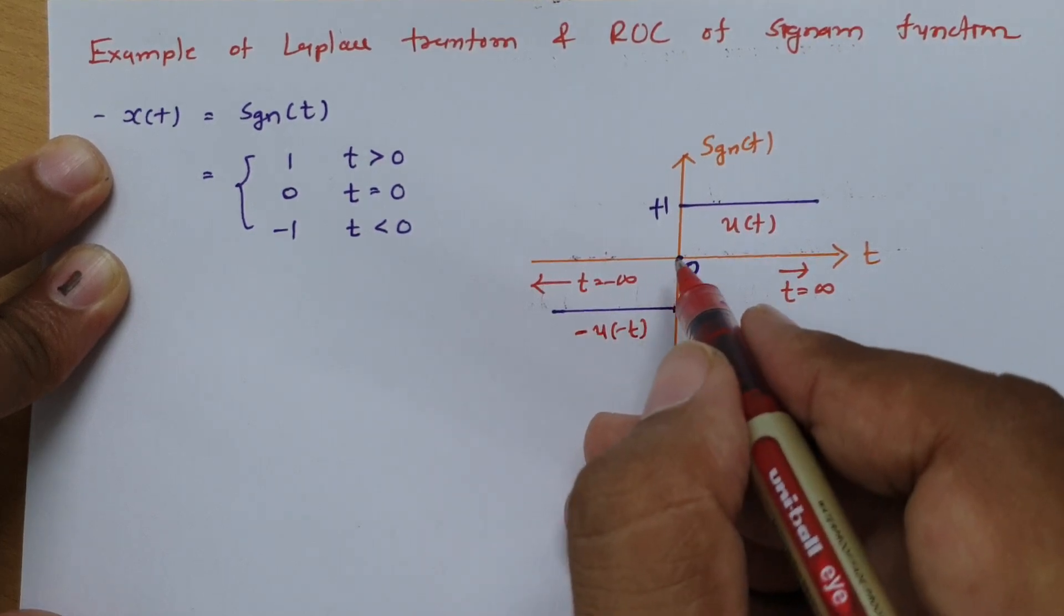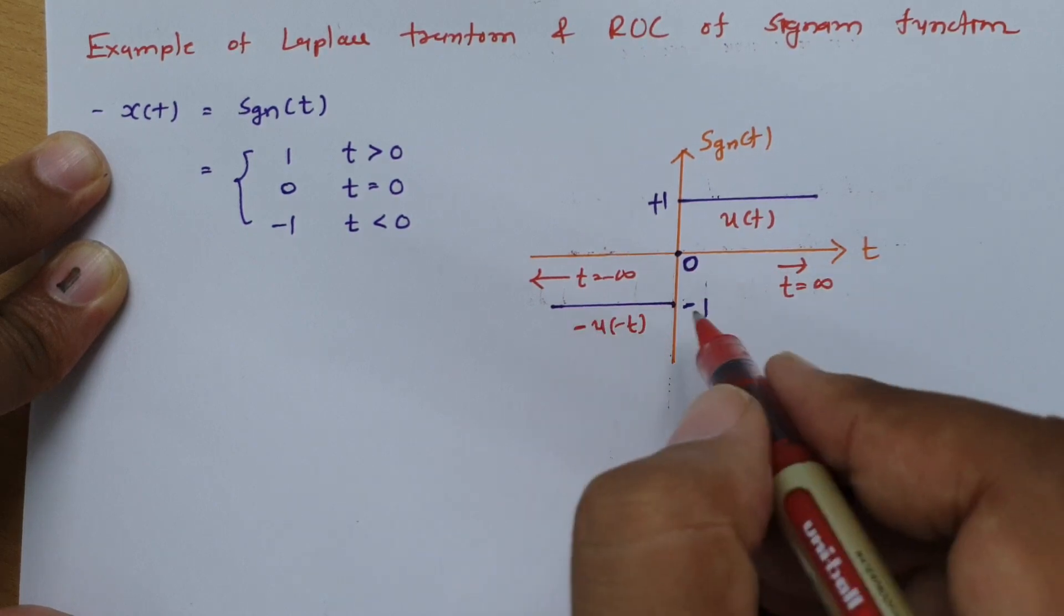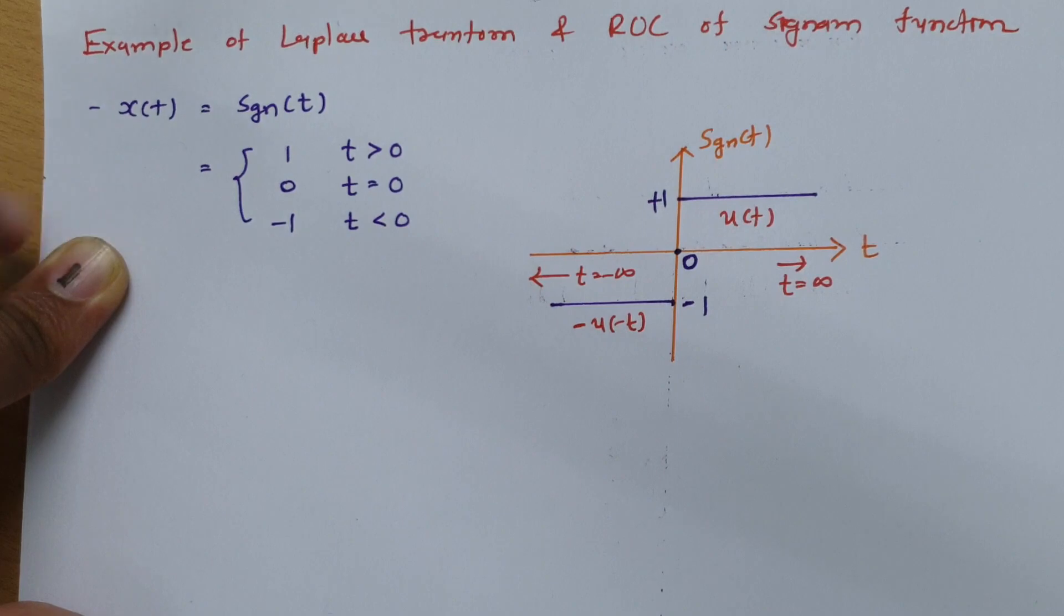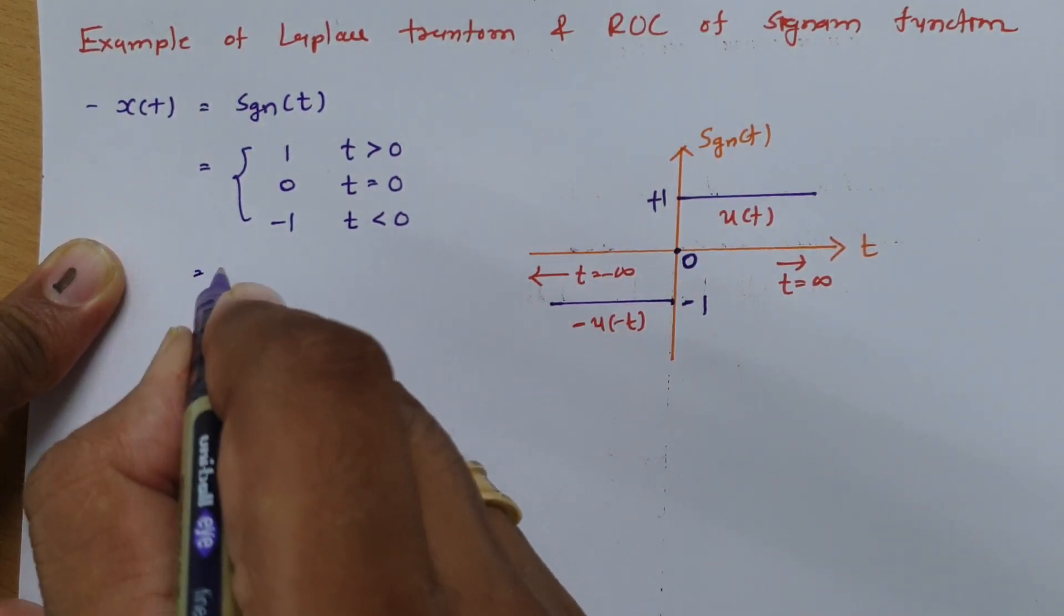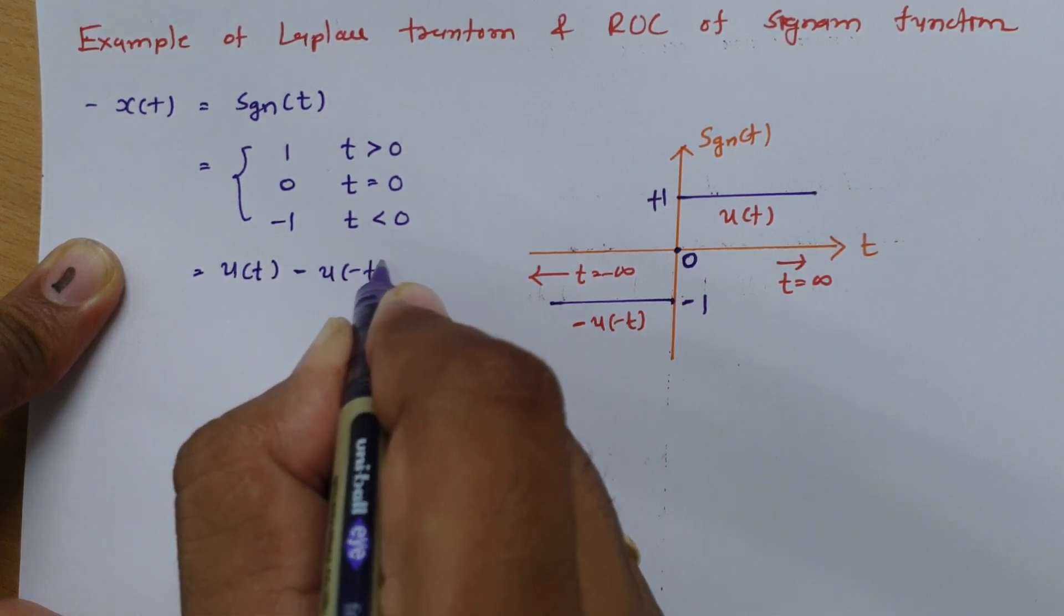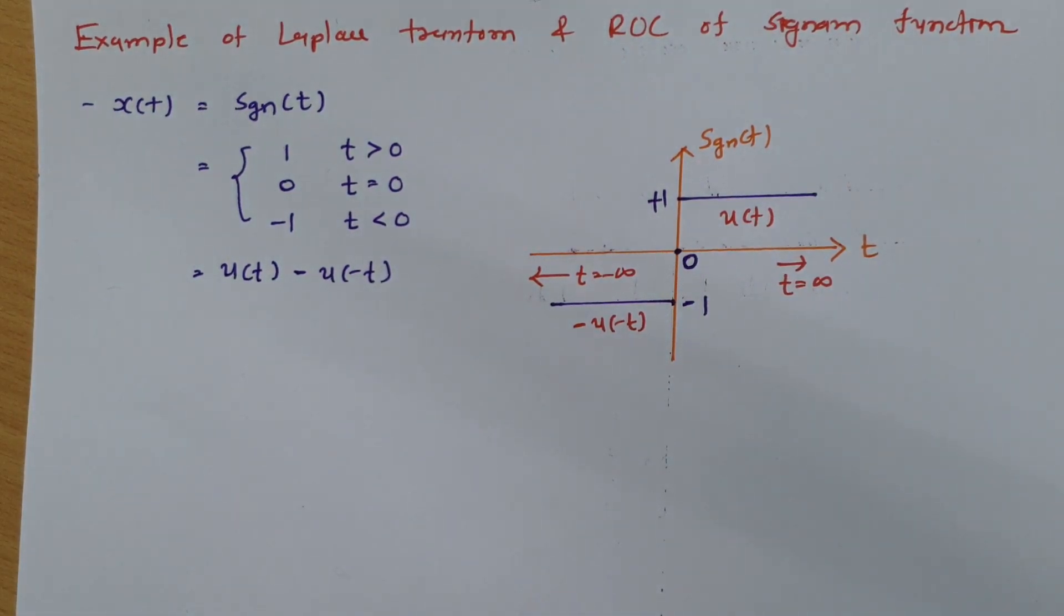See if it is plus 1 in that case it is u of minus t but it is minus 1 so one can say this is minus u of minus t. So ultimately we can write signum function as u of t minus u of minus t. So this is what signum function.